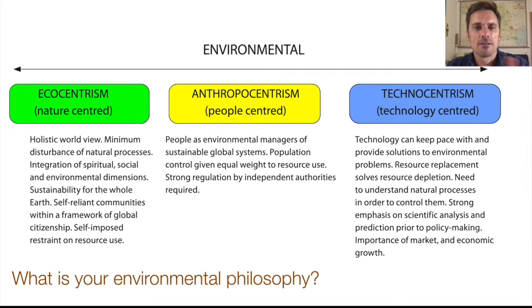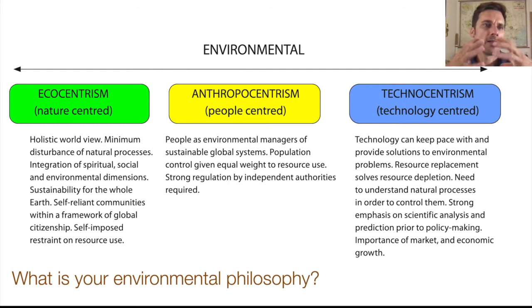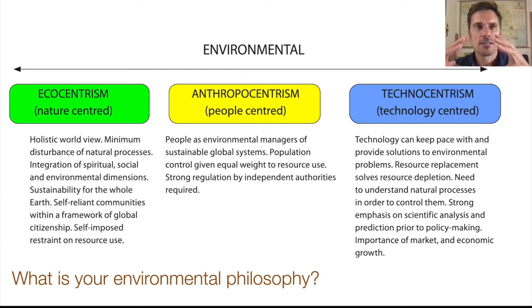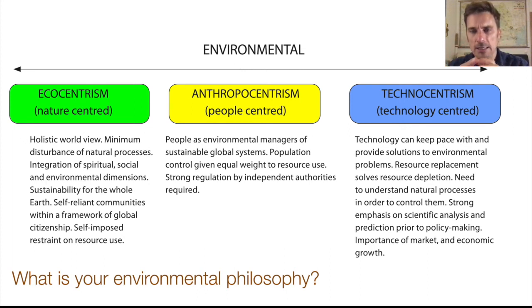Briefly put: ecocentrism is someone who cares about the environment and doesn't want it touched — protected at all costs. Anthropocentrism says humans should manage the environment; 'anthro' meaning human — we need to be the center, focused, and manage the space. Technocentrism holds that technology can fix anything: don't worry about it, we will solve these problems with technology.